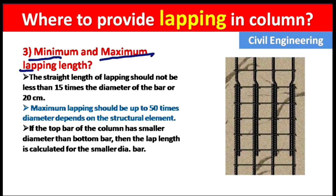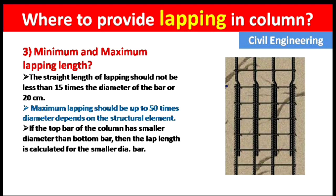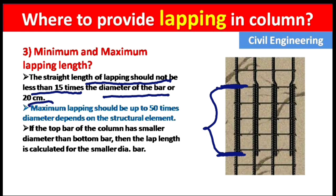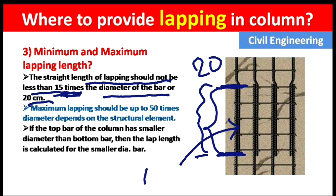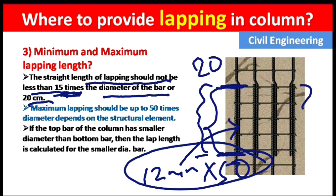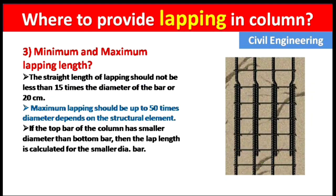How much should be the minimum and maximum lapping length? Lapping length is the zone where the steel rods overlap. The minimum lapping length should not be less than 15 times the diameter of the bars or 20 cm, whichever is greater. If the bar diameter is 12 mm, multiply by 50 to get the overlapping length — that gives the minimum overlapping length.